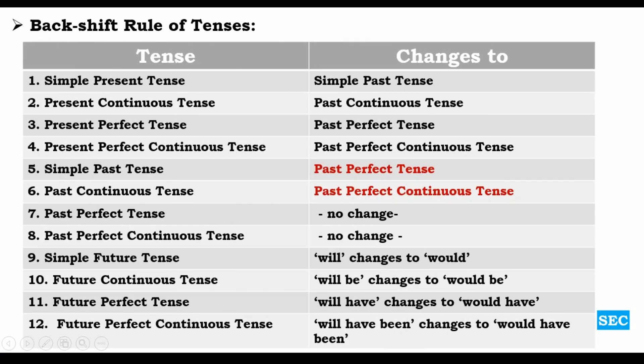Now let us look at the tenses and how they change in reported speech. Simple present tense becomes simple past tense. Present continuous becomes past continuous. Present perfect becomes past perfect. Present perfect continuous becomes past perfect continuous. The shift is very clear: present tense becomes past tense, present continuous becomes past continuous, present perfect becomes past perfect, and present perfect continuous becomes past perfect continuous.